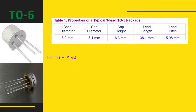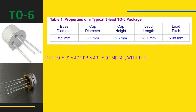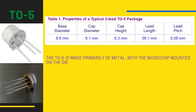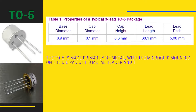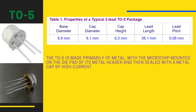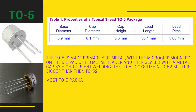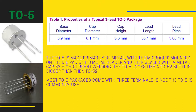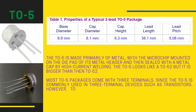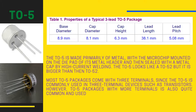The TO5 is made primarily of metal, with the microchip mounted on the die pad of its metal header and then sealed with a metal cap by high current welding. The TO5 looks like a TO52 but is bigger in size. Most TO5 packages come with three terminals, since the TO5 is commonly used in three-terminal devices such as transistors. However, TO5 packages with more terminals are also quite common and are used for operational amplifiers.